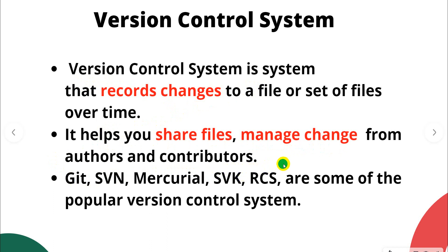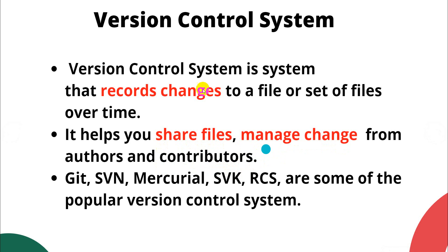When you are working on different projects, you need to share those files with different persons and manage changes from different contributors — track and record those changes. Version control systems help with that. Some popular version control systems are Git, SVN, Mercurial, SVK, and RCS.